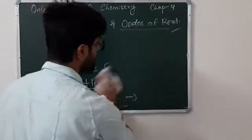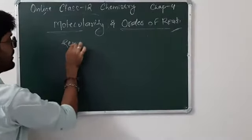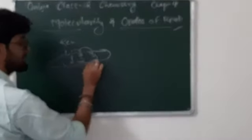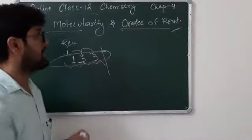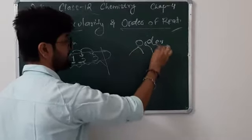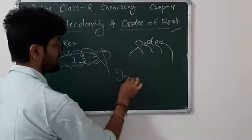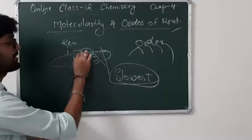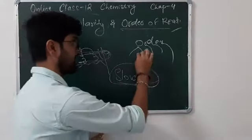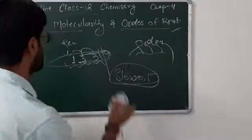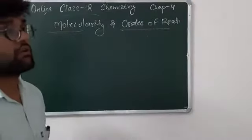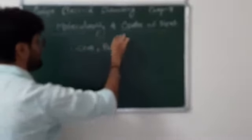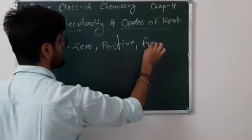Molecularity of any reaction can usually be calculated only up to 3 steps - beyond 3 steps we cannot calculate it. Order of reaction, however, can be calculated for any step. The slowest step defines what the order of reaction is. So molecularity can only be calculated up to 3 steps, whereas order of reaction can be calculated for any step. Just as molecularity cannot be 0 or a fraction, order of reaction can be 0, can be positive, and can also be a fraction.